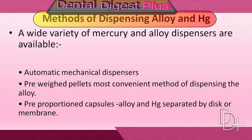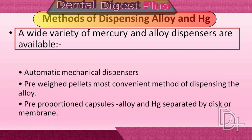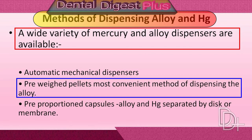Methods of Dispensing Alloy and Mercury. A wide variety of mercury and alloy dispensers are available. The most common is the dispenser based on volumetric proportioning. Pre-weighed pellets or tablets are a more convenient method for correctly dispensing the alloy.